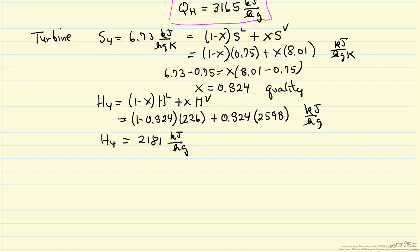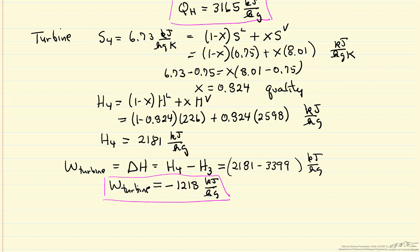Now we have the enthalpy leaving the turbine, we can calculate the work, because the energy balance for the turbine is the work is equal to the change in the enthalpy because it's adiabatic. Exit is H4, entrance is H3. So here's the work from the turbine, negative 1218 kilojoules per kilogram. Notice it's negative because we're removing energy in the form of work from the turbine.